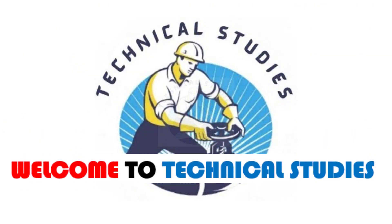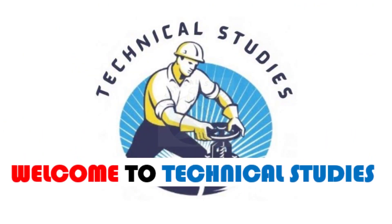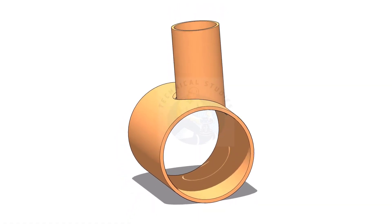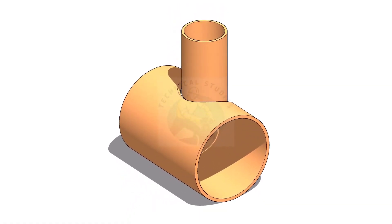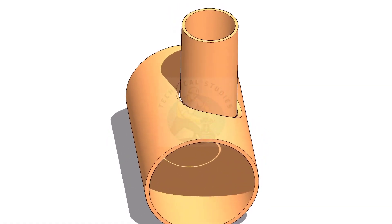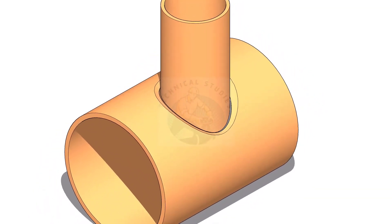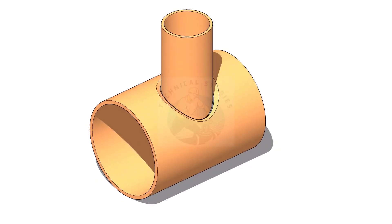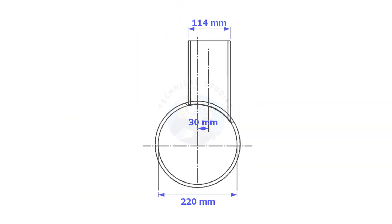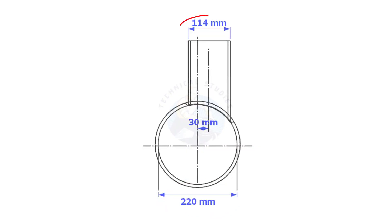Welcome to Technical Studies. In this video, we will learn how to mark an eccentric T branch. Always consider the inside diameter of the header when you want to lay out the branch. Here, the header ID is 220 mm, the branch OD is 114 mm, and the offset is 30 mm.